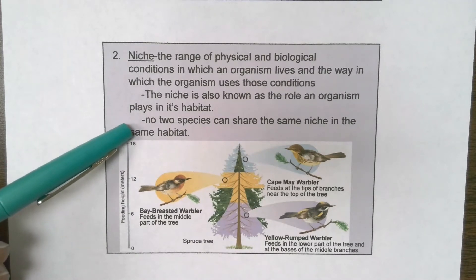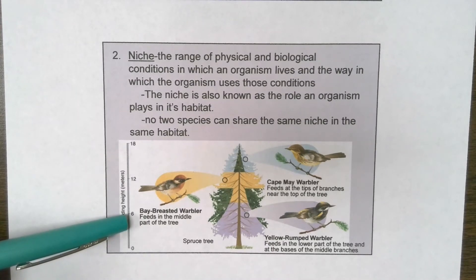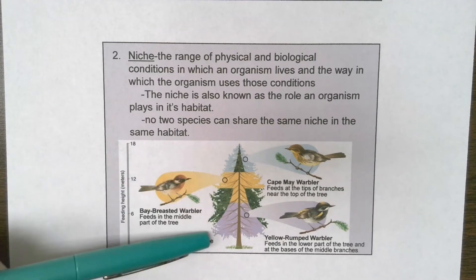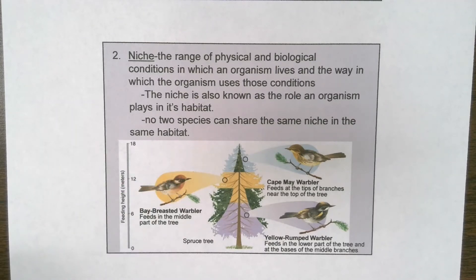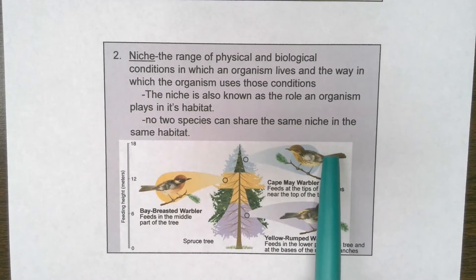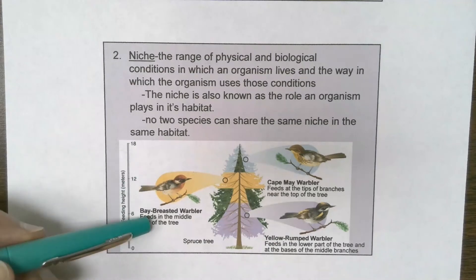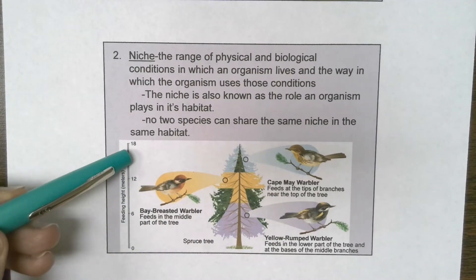Looking at this diagram with one tree, we've got three different species of warblers: a bay-breasted warbler, a Cape May warbler, and a yellow-rumped warbler. Notice they each occupy different areas of the tree as far as where they feed. They eat the same types of organisms — like small insects — but they stay in their own areas. If a yellow-rumped warbler flew up to the Cape May warbler's territory within the tree, they might get in a fight. These different feeding locations put them in three different niches within the same habitat.